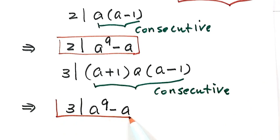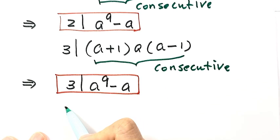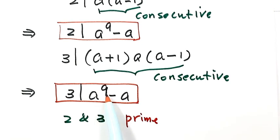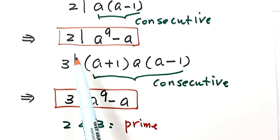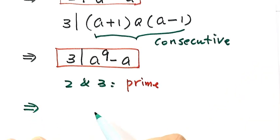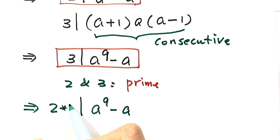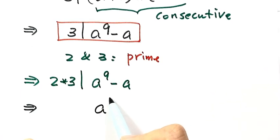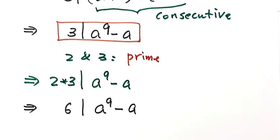Because 2 and 3 are both prime numbers, and a to the power of 9 minus a is divisible by both 2 and 3, we conclude that a to the power of 9 minus a is divisible by 2 times 3, which equals 6. Thus we have proved the question. Thanks for watching.